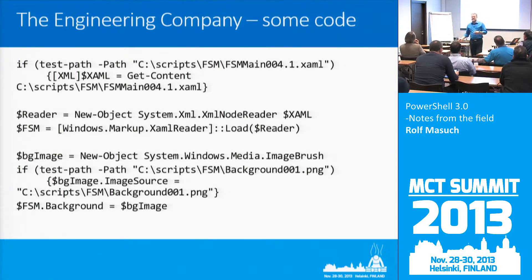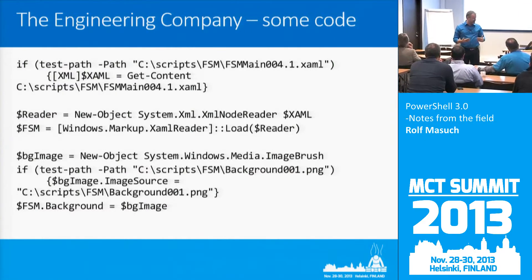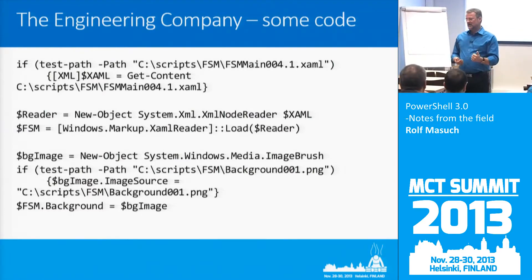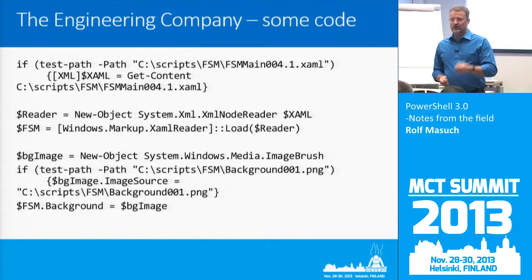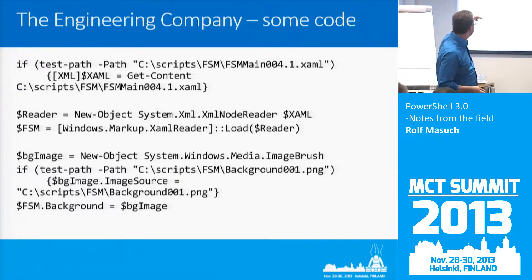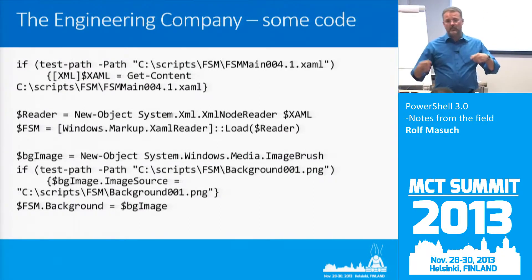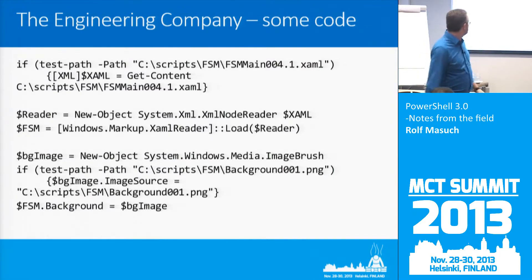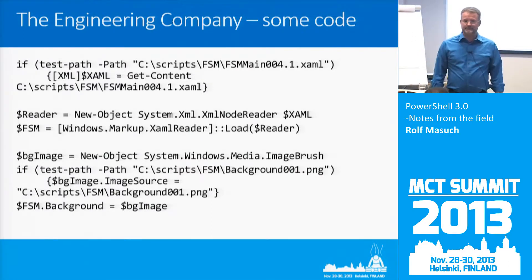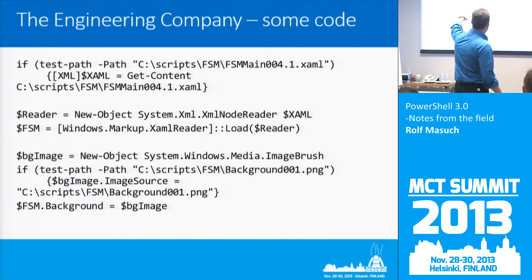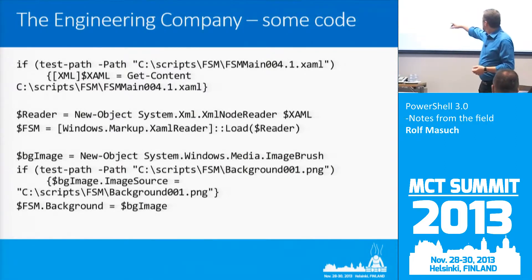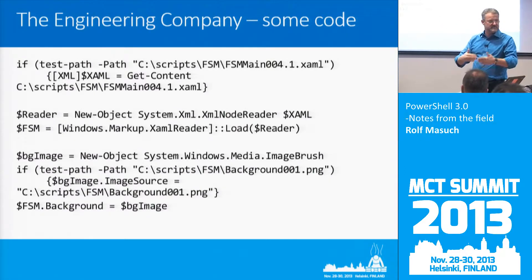I need to put some icons and background pictures into this little thing, so for any dependent file I'm depending on, check the path. Make sure it is there. Then get the content of the XAML file. It's productive code used at that customer. You do a reader — system XML XMLNodeReader — and import it into PowerShell. From there you load the reader. '$fsm' is the file service manager. Put a background image and again: test, test, test. Make sure everything is available before you use it.